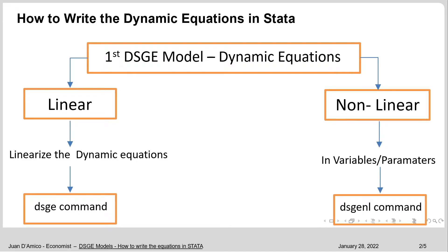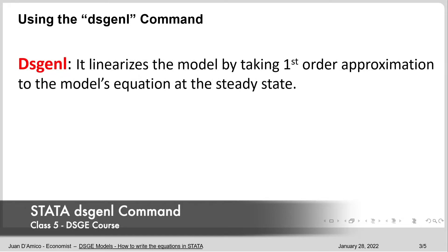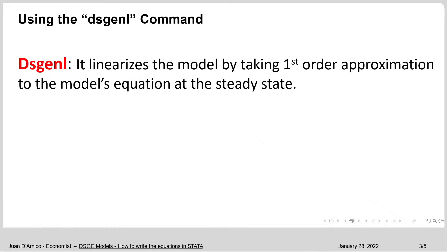So you are telling Stata that this is a non-linear model. Since the dynamic equations in our model are not linear, we are going to be talking about the DSG non-linear command. What Stata is doing is linearizing the model by taking a first-order approximation to the model's equations at the steady state — so Stata is doing an approximation and linearizing the model for us.